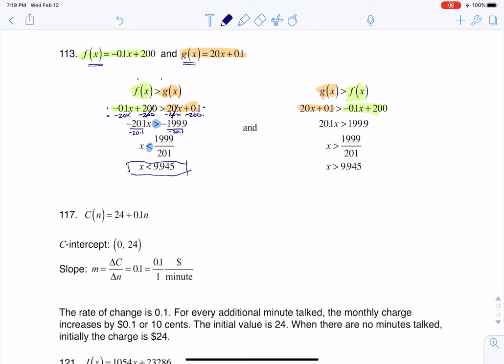And on the flip of that, I did the exact same thing over here. I just had a slightly different way of solving it. I added 0.1x to both sides, and then I subtracted 0.1 from both sides. And when you do that, these are going to cancel here, these are going to cancel here. You get 20.1x being greater than 199.9.